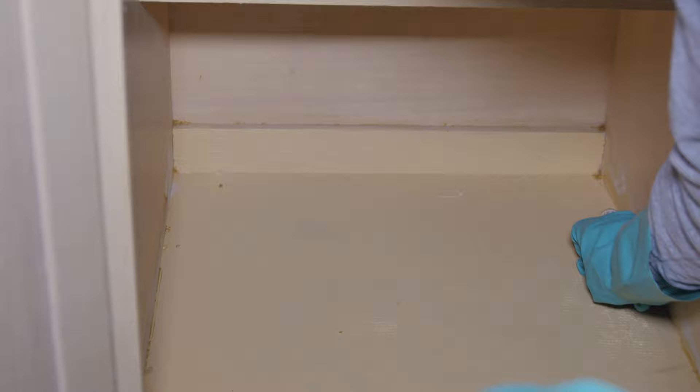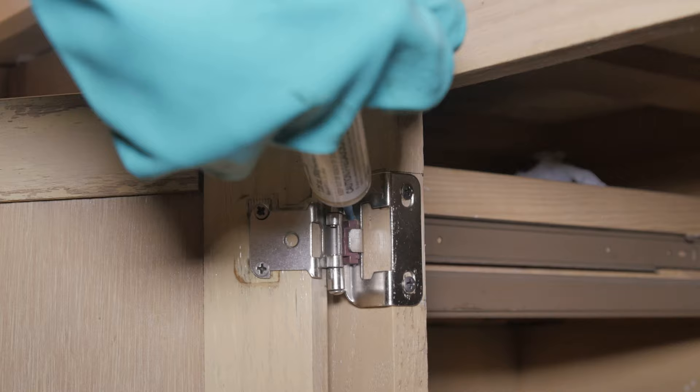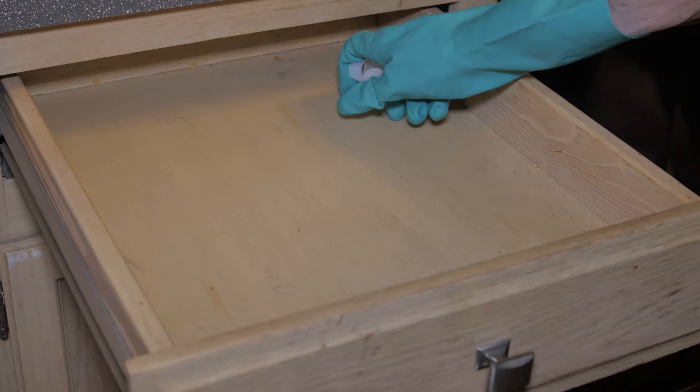In the kitchen, apply bait to the back corners and along the shelves of emptied cabinets. Also, along the underside of the shelves and on the door hinges of the cabinets.